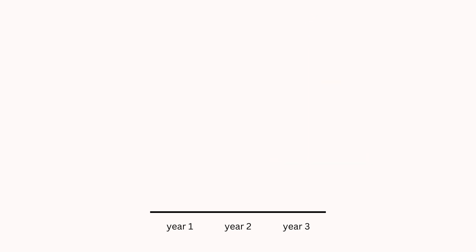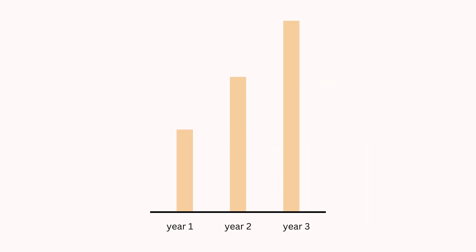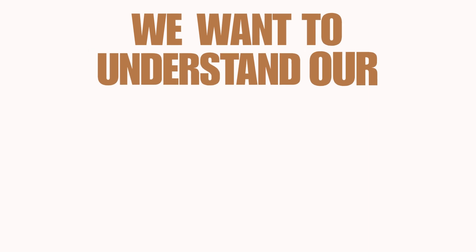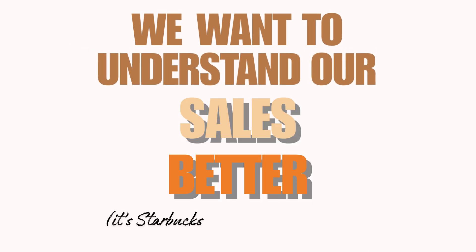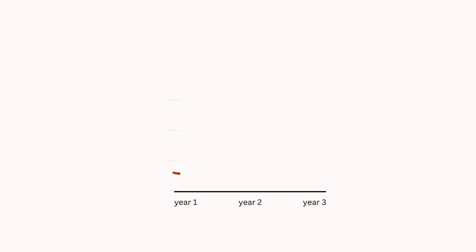So we track our data and we do well. Every year we sell more and more pumpkin spice lattes. But we want to understand our sales better, so we start tracking monthly sales because we know we have seasonal data. This is what our sales data looks like on a monthly basis.